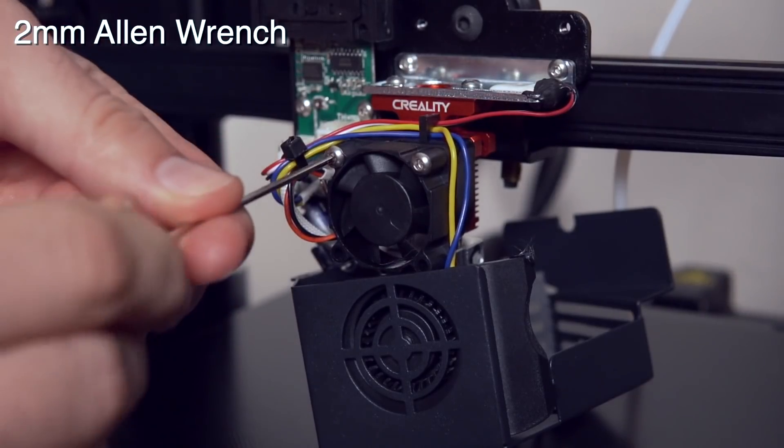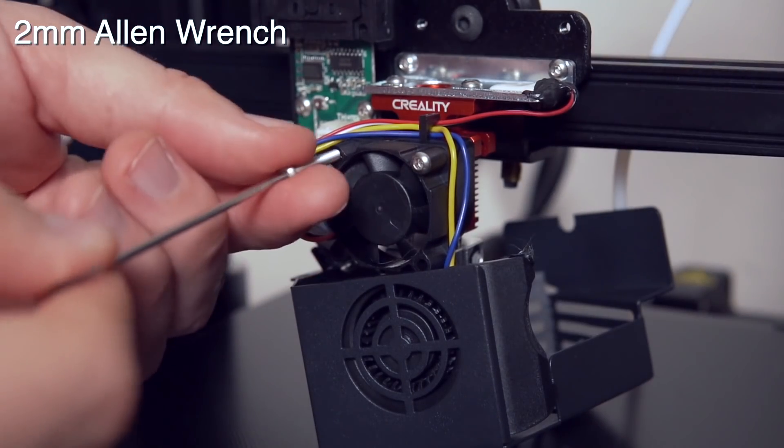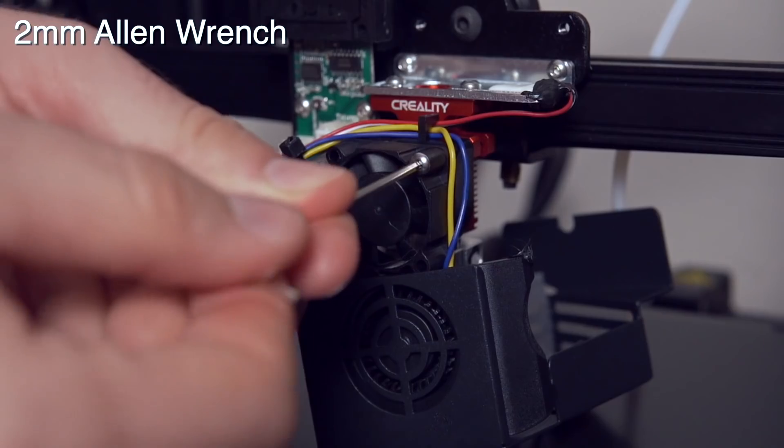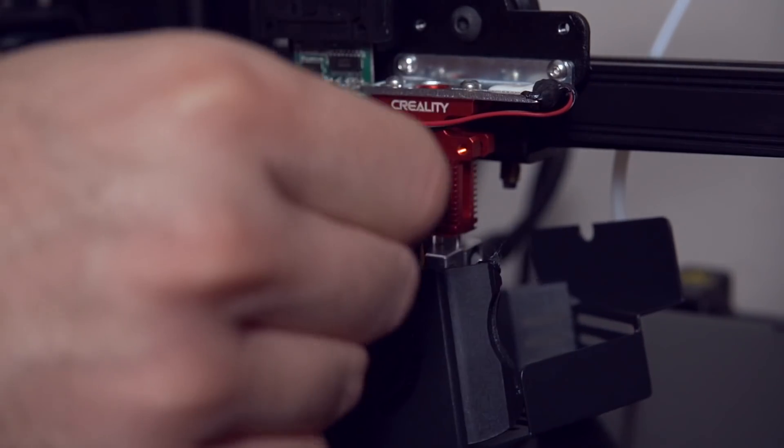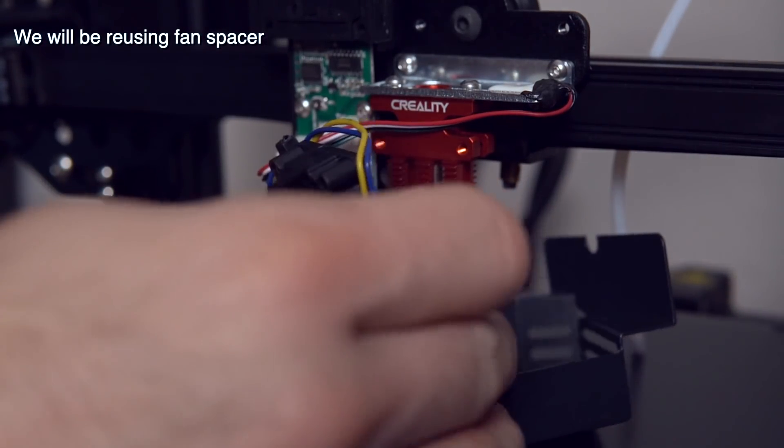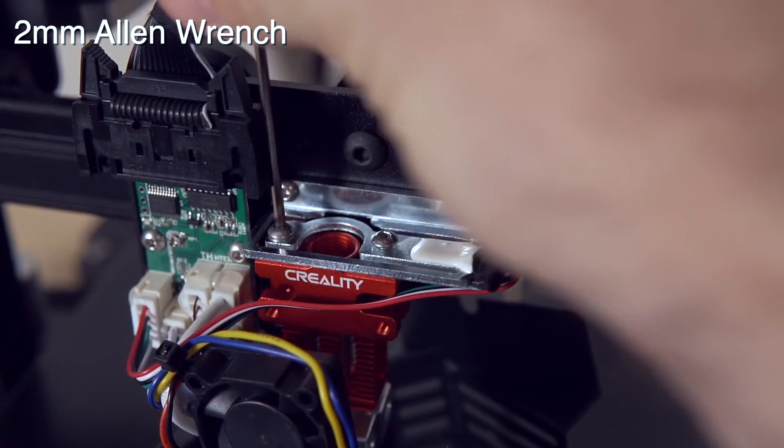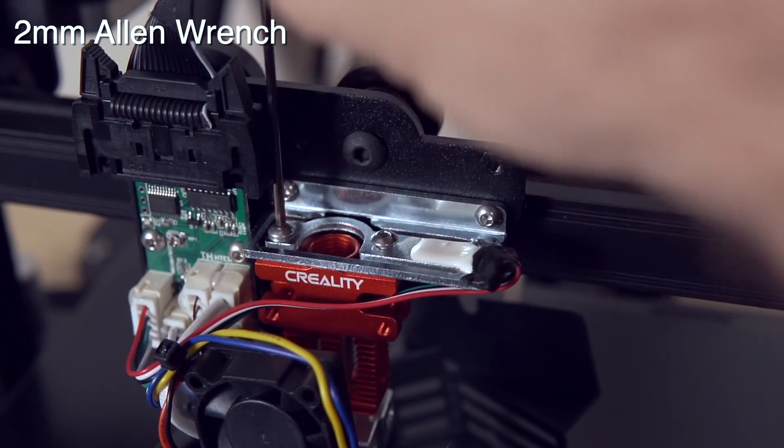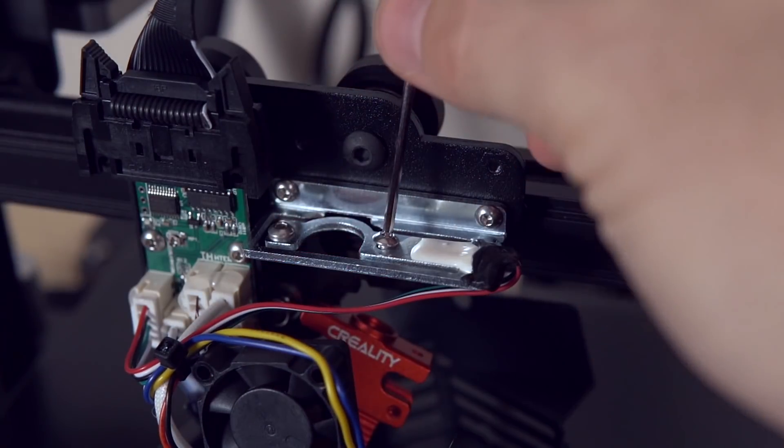Next, grab the two millimeter Allen wrench and remove the two long screws that are holding the heatsink fan in place. Once again, we will be reusing both of those screws as well as the spacer for the fan, so make sure you keep that spacer as well. Using that same two millimeter Allen wrench, we will then go ahead and remove the final two screws that are holding the hotend to this carriage, which are located on the very top of the hotend.